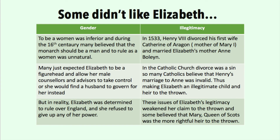But some people just didn't like Elizabeth. Some of these views had to do with the fact that she was female. To be a woman was considered inferior, and during the 16th century many believed that the monarch should be a man, and to rule as a woman would be unnatural. Many just expected Elizabeth to be a figurehead and allow her male counsellors and advisers to take control, or she would find a husband to govern for her instead. But in reality Elizabeth was determined to rule over England and she refused to give up any of her power.